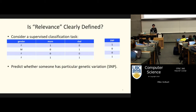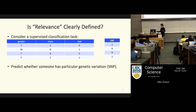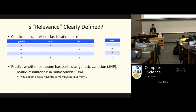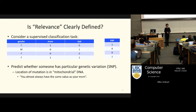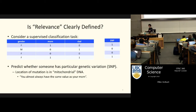Imagine you have a dataset and you want to predict whether people have a certain genetic variation, and we just have some very basic features: the gender of the person, whether the mother had this variation, and whether the father had this variation. Because of the way the variation is passed down, you pretty much always have the same value as your mother. So this is a toy example where we kind of know what the right answer is — the feature is supposed to be mom and the rest should be not relevant — and we want to see which feature selection approaches would actually get that right answer.